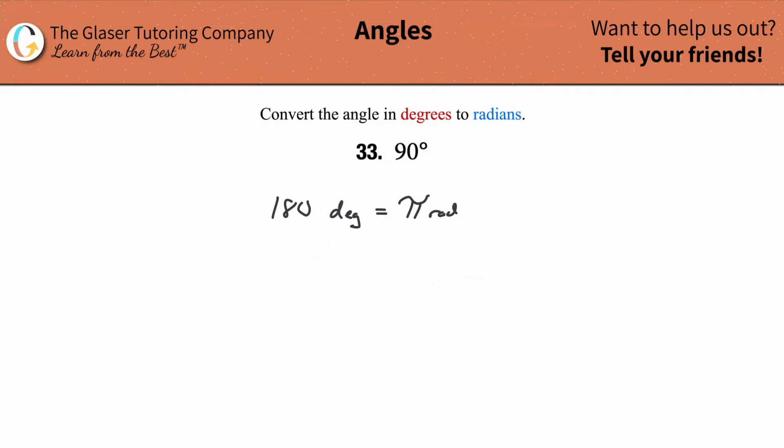Now I'm going to use the conversion value here up at the top. I'm going to use this known relationship in order to do my conversion. And it doesn't matter, by the way, if you wrote pi radians equals 180 degrees. It doesn't make a difference. If 2 equals 2, well then 2 should also equal 2. It doesn't make a difference.